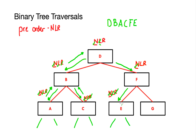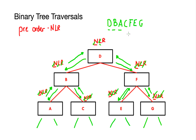Once completed I move back up and check off the L part of node F, then traverse the right subtree at G. I write my rule down again, take the node first, then the left subtree which is non-existent, then the right subtree which is also non-existent, and move back up to F having checked off all rules there. The final step is to move back to root node D and tick off the R rule.